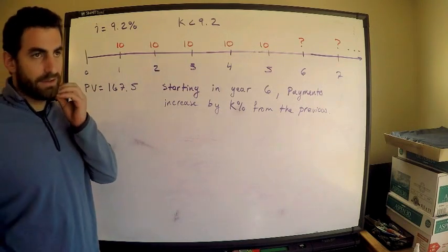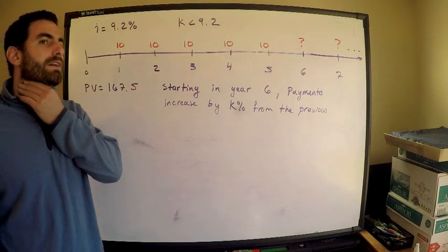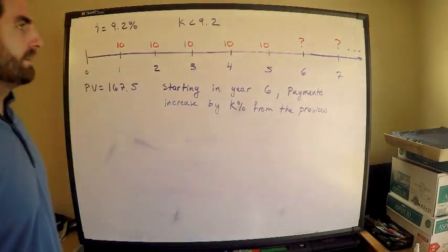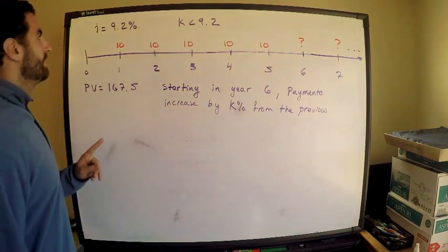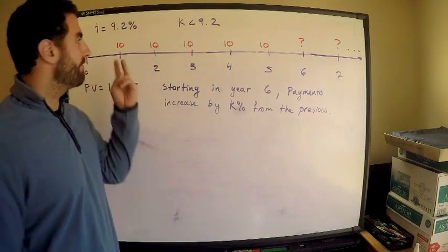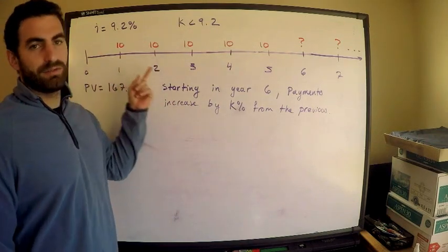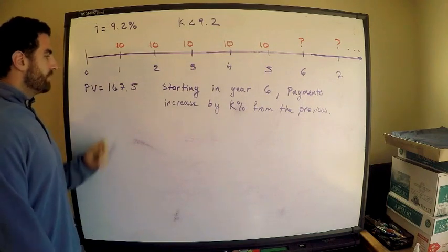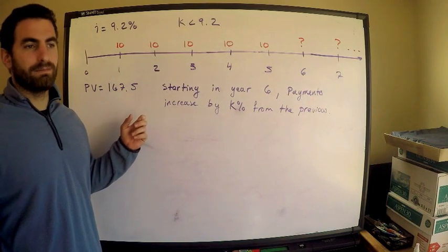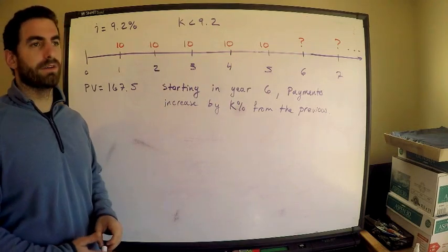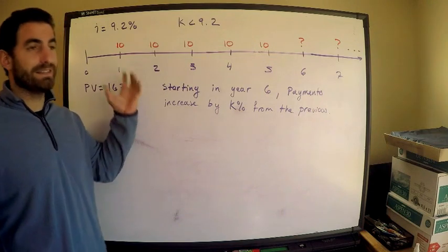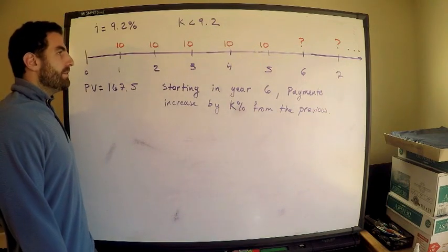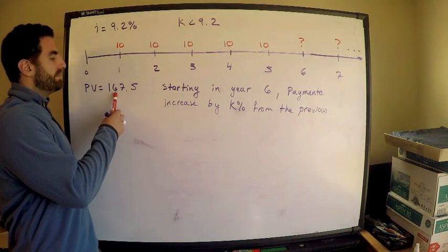We're told that the effective interest rate is 9.2% annually. The payments are made annually, so the interest rate coincides with when I make the payments. The present value of this perpetuity, meaning an annuity with payments that go on forever, is 167.5.